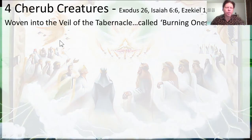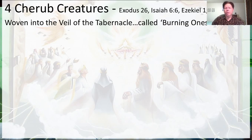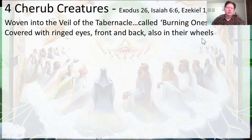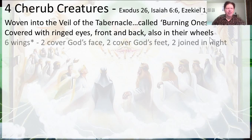The four creatures are woven into the veil of the tabernacle. Isaiah 6 calls them seraphim or burning ones — they are on fire; that's all the word seraphim means. They're cherubs, but they're on fire. They're covered with ringed eyes, front and back, also in their wheels. It would appear that their wheels and their feet transform between one another — they become wheels when they move, and they transform themselves into a chariot, then become feet again. It's like the legs of a spaceship that land, and then the wheels when it takes off.